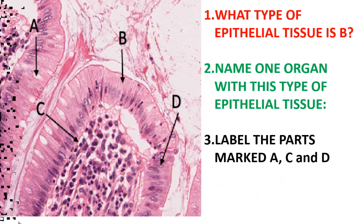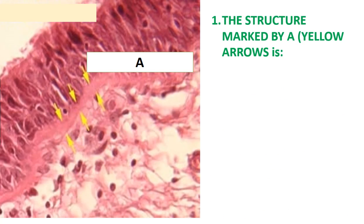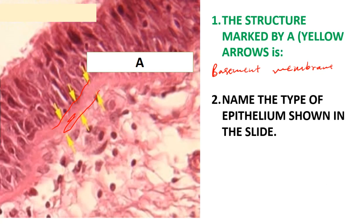The next question: the structure marked by A, which is the yellow arrow, is — if you look at this yellow arrow, we are simply looking at the basement membrane. This is the same thing we talked about in the previous slide. The next thing: name the type of epithelium shown below.